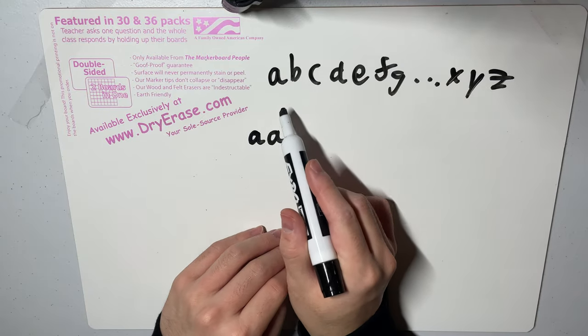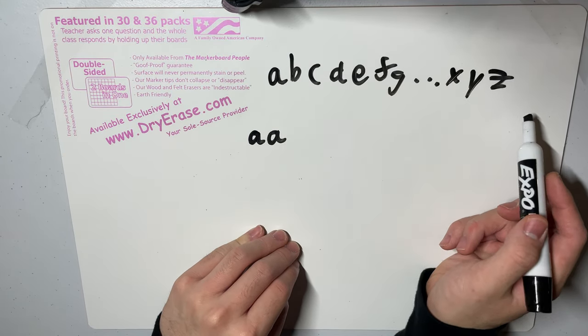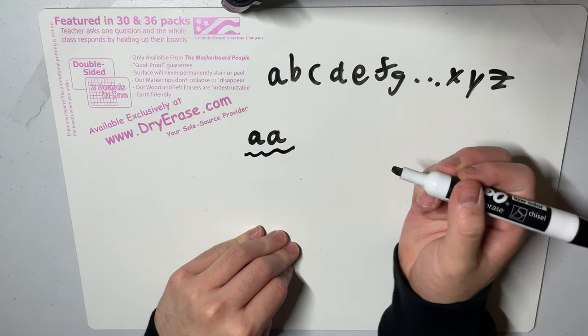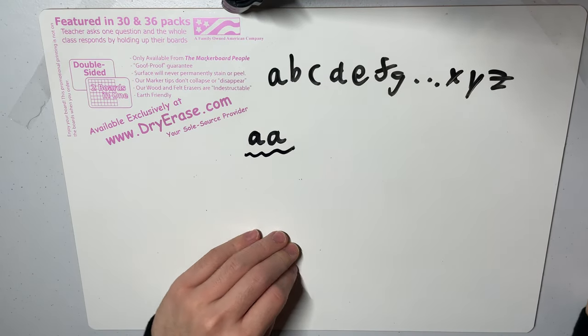Also, out of all strings of length two that don't appear as a substring in this input, 'aa' is lexicographically minimum.